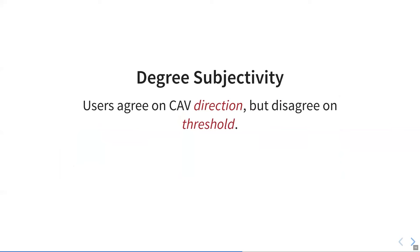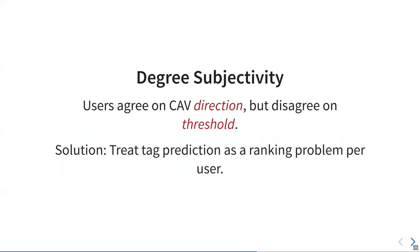In the first case, where we have degree subjectivity, we can say that users agree on what direction this concept activation vector should take, but they disagree on what threshold should be used to classify business like versus non-business like. We can solve this by instead of treating tag prediction as a classification problem, we can treat it as a regression or a ranking problem per user. Where per user, we ask our CAV to predict whether they think that one item is more business-like than another. We can train linear regressors that predict this, for example, using RankNet.